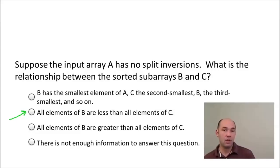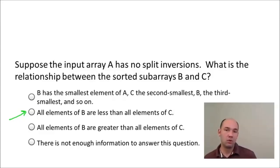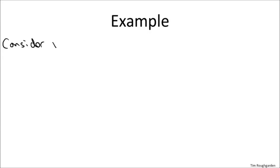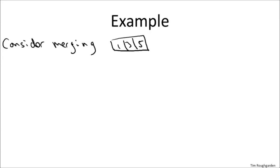That is in fact the case. We're going to see a general pattern about copies from the second array C to the output array exposing split inversions in the original input array A. Let's look at a more detailed example. We return to the example from the previous video: an array with six elements ordered 1, 3, 5, 2, 4, 6.